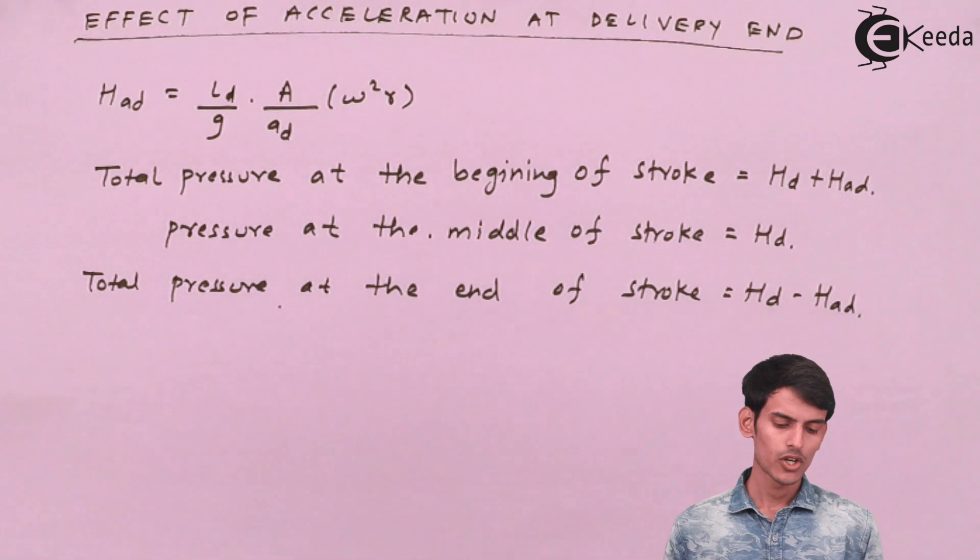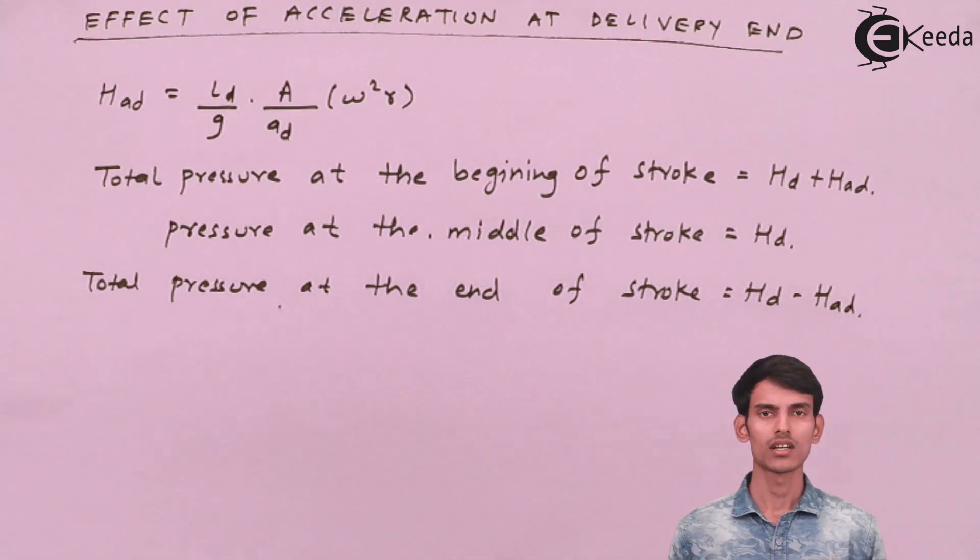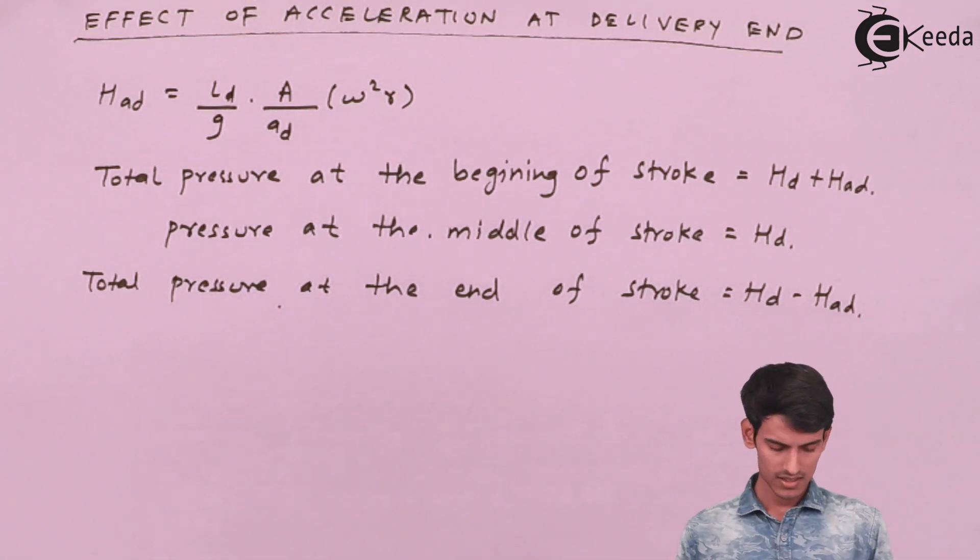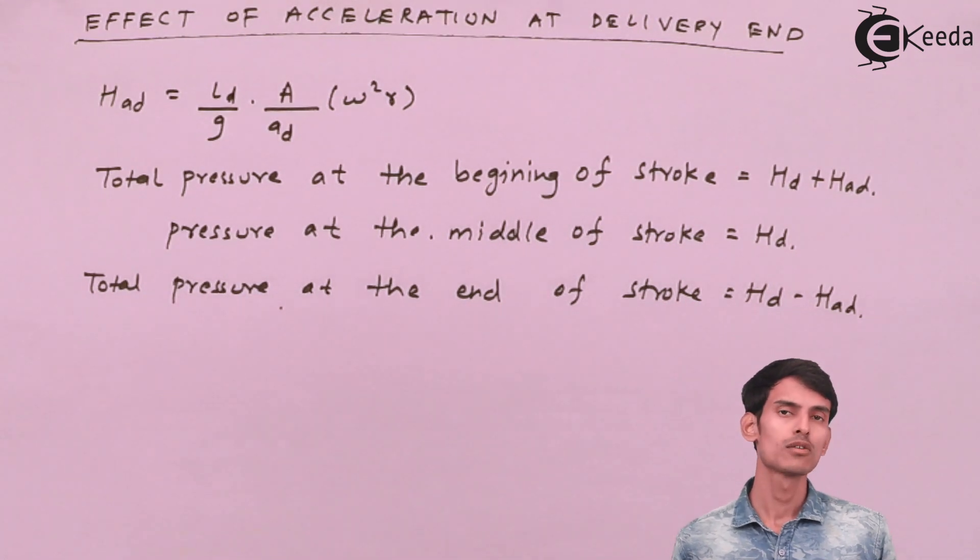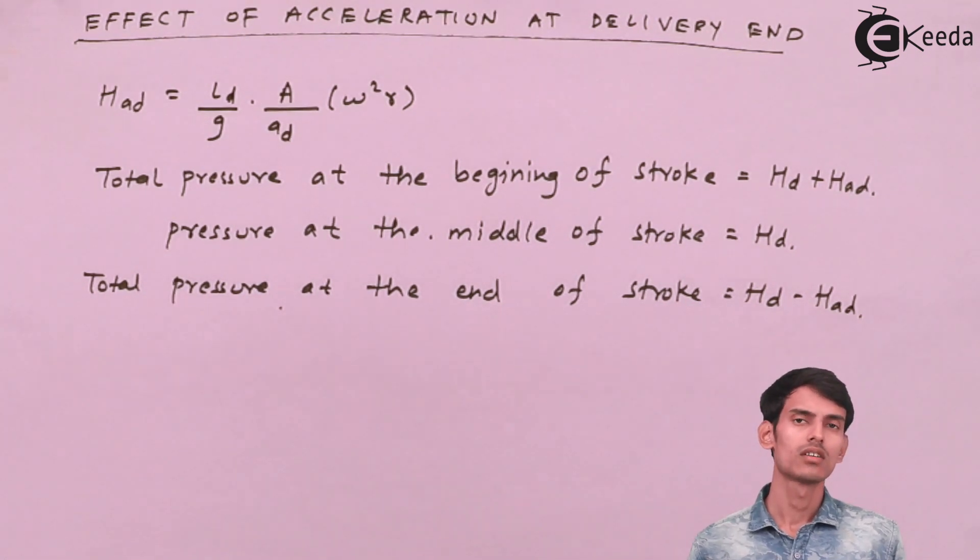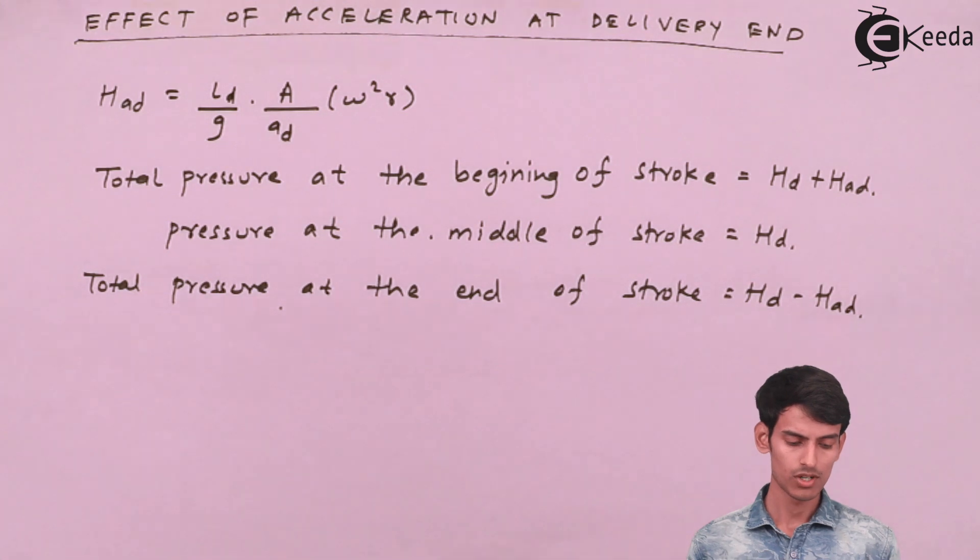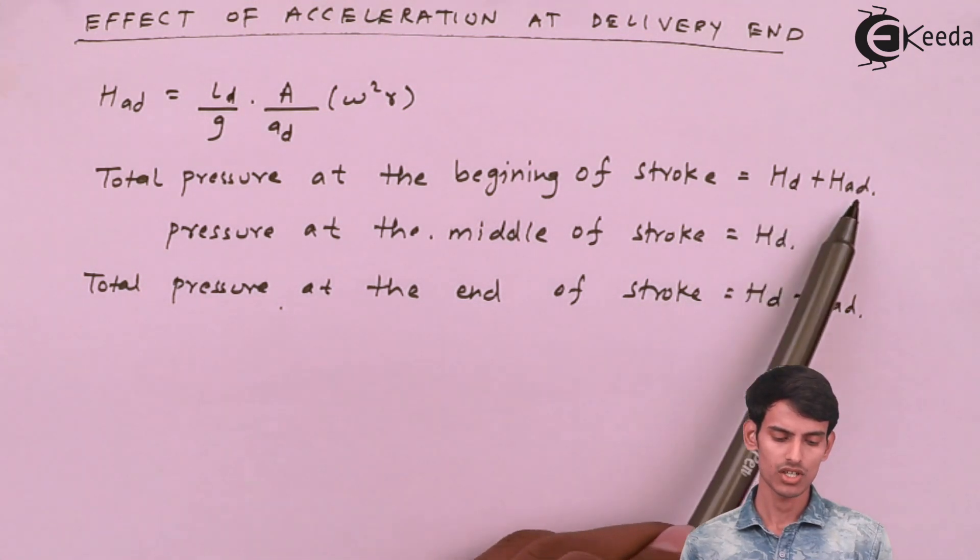Now the pressure at the beginning of stroke is HD. It has to pump through HD, and since the flow is accelerating at the initial end, it has to be positive. So the total pressure becomes HD plus HAD.